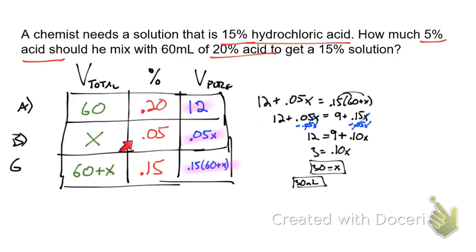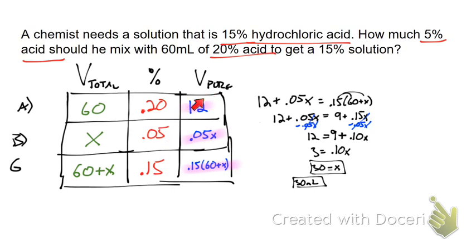That means 30 milliliters of the 5% solution is what we add to create the concentration we want. Some final words of wisdom: set up your table, remember that total volume times percentage concentration equals pure volume. Fill in what you can on the left two columns, create the right column by multiplying those together, and that right column gives you the equation to solve. Follow that general pattern and you should be okay on this type of problem.